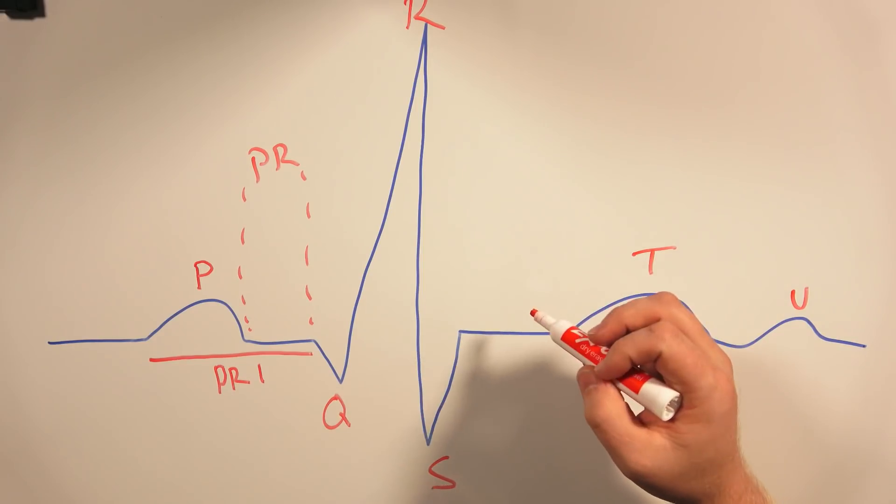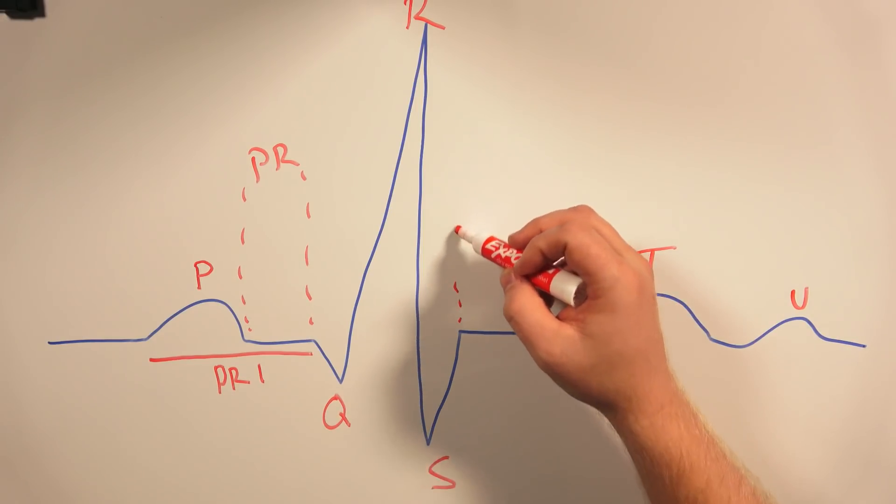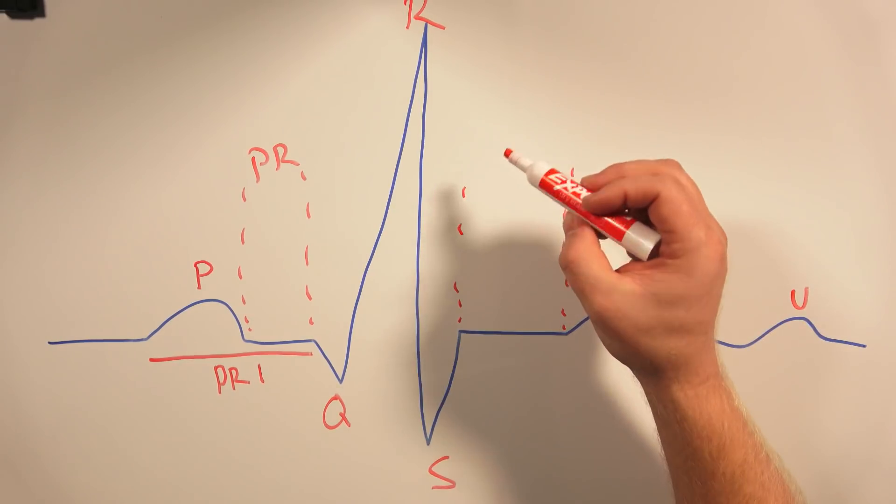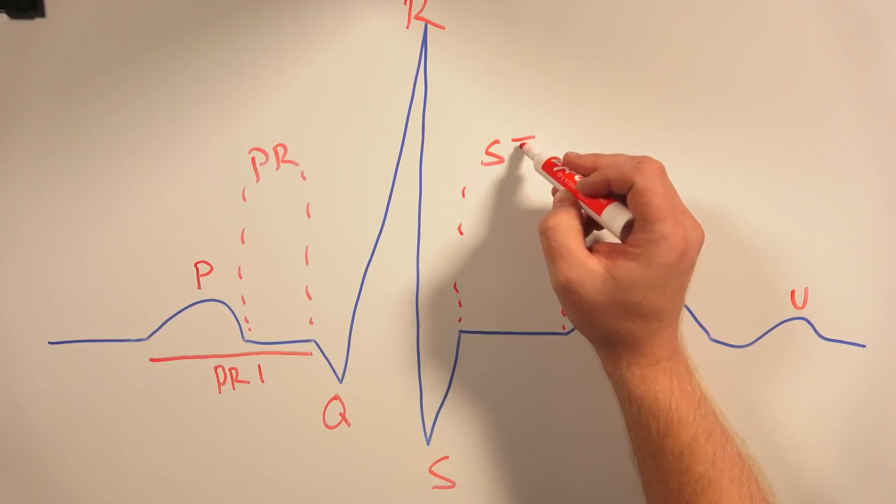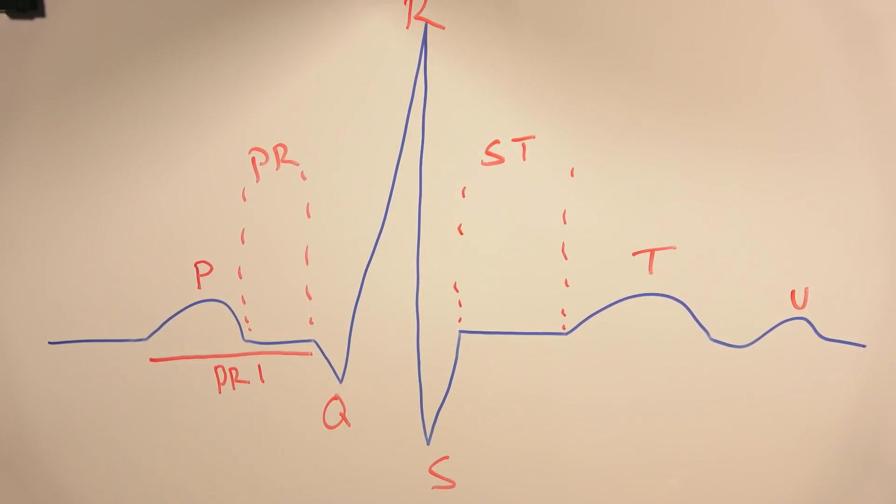Then a couple other little segments that you have - when this bumps up all the way until this last little bump here, what you have is the ST segment. So that's really what you're going to see in the basic EKG graph.